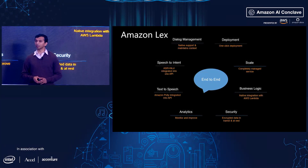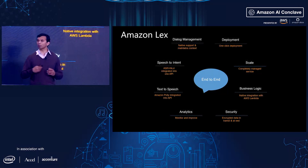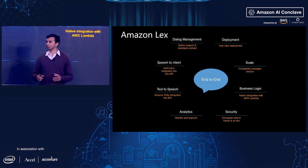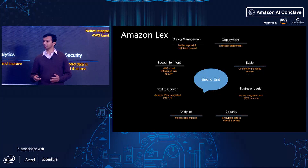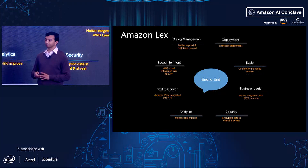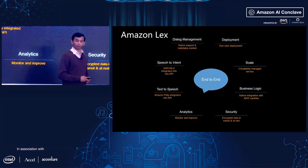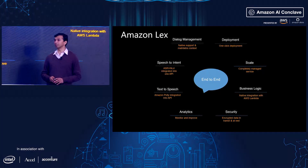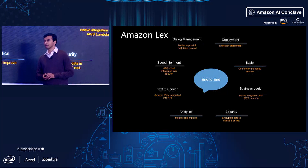Analytics: the trick to building a good conversational experience is that you're iterating constantly. No one gets the experience right the first time. You build a bot, but then you want to continuously analyze how customers are interacting with it — maybe they're asking questions you didn't anticipate, or asking the same thing in different ways. And text-to-speech: we have Amazon Polly integrated natively into Lex. You just pick the voice and language, and it just works — you don't have to make multiple API calls to build your voice experience.